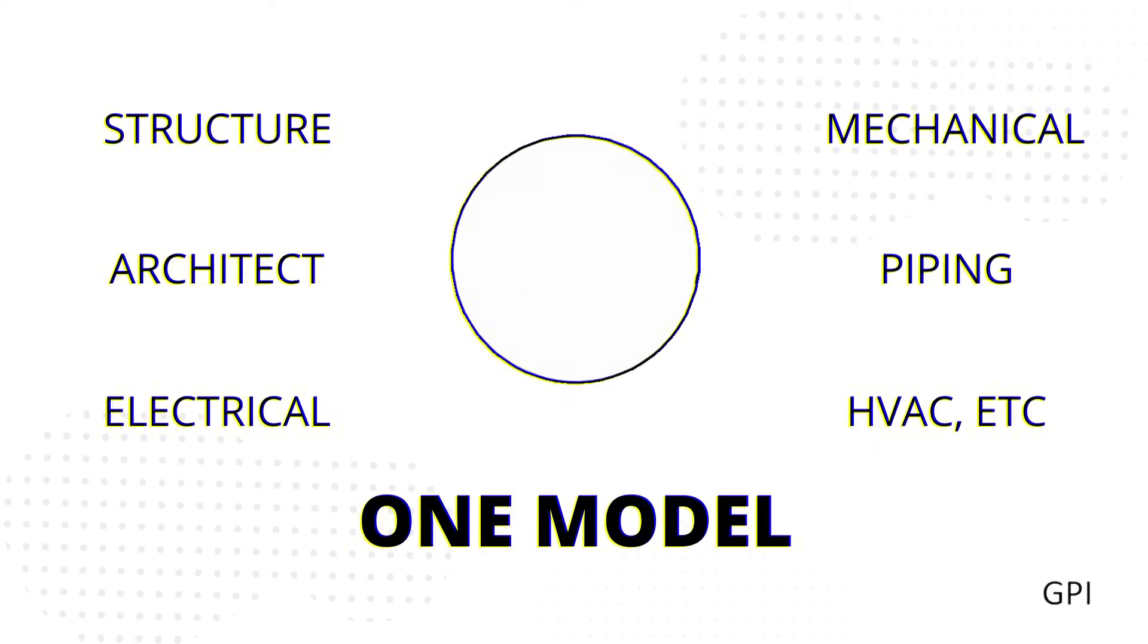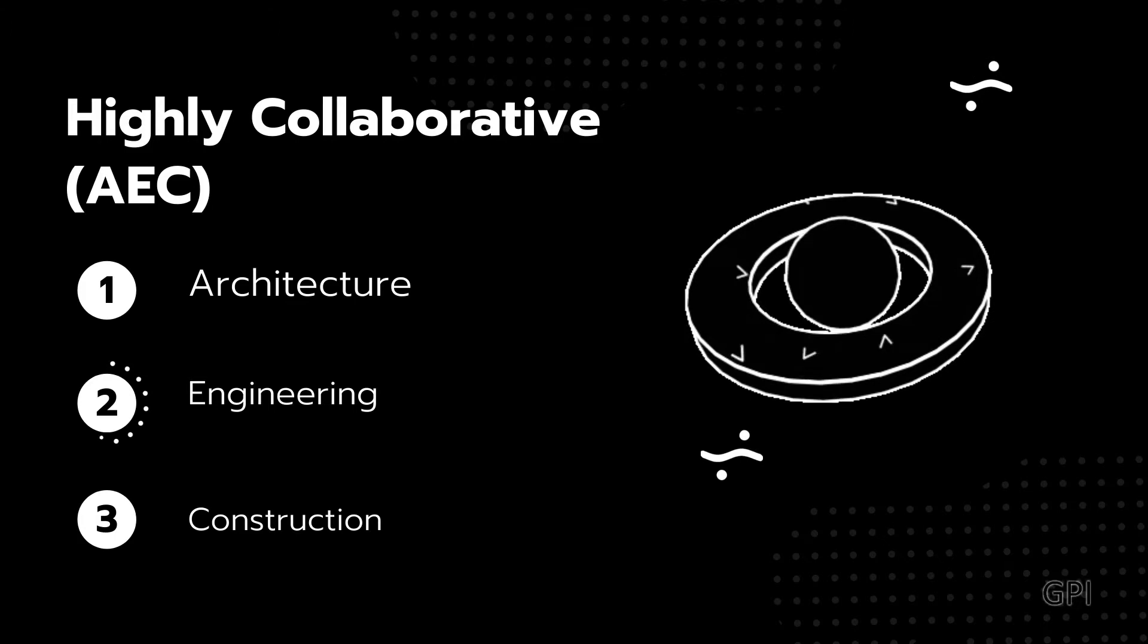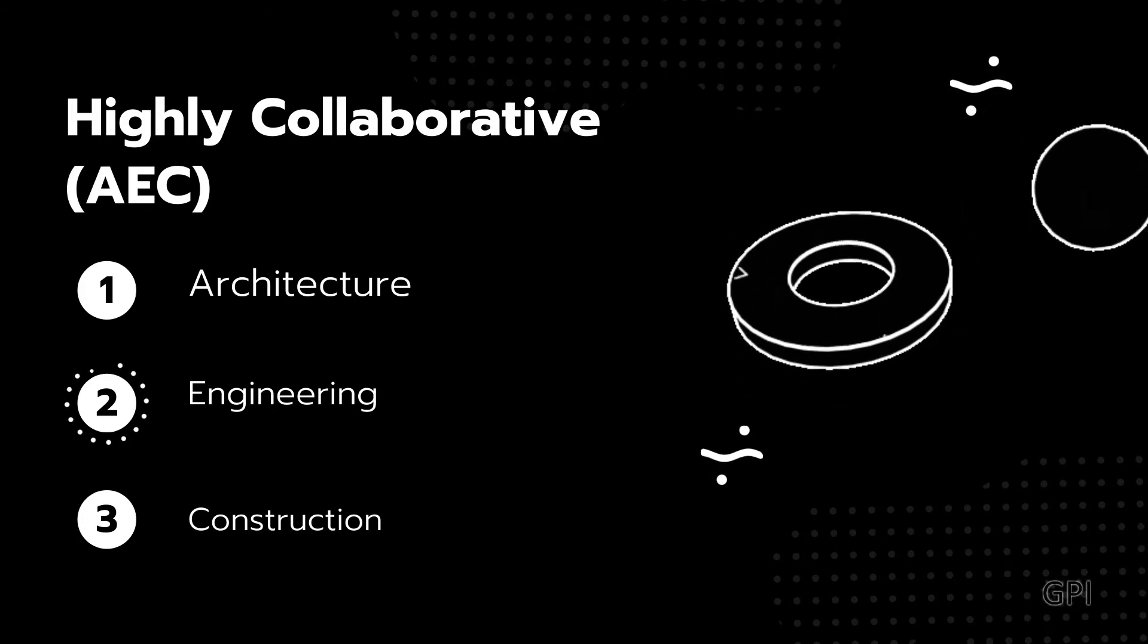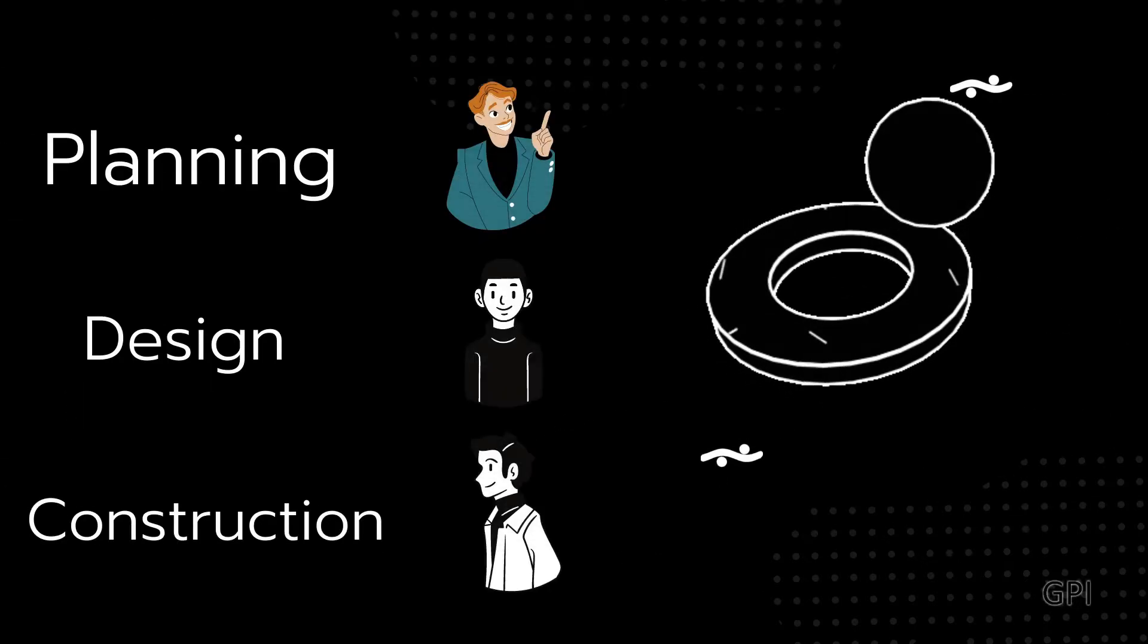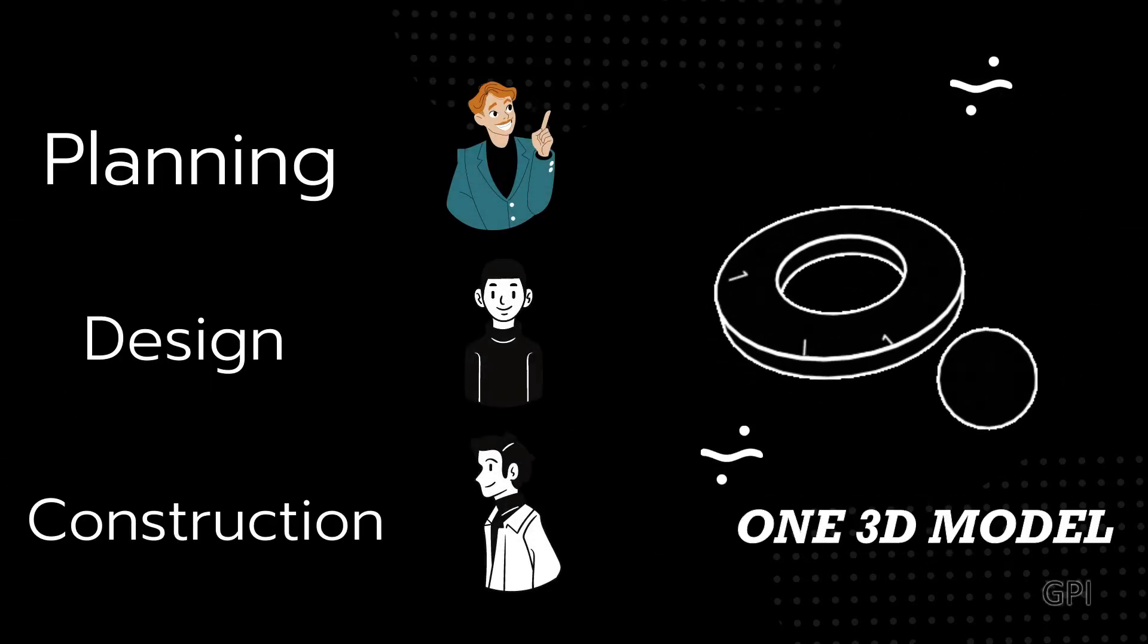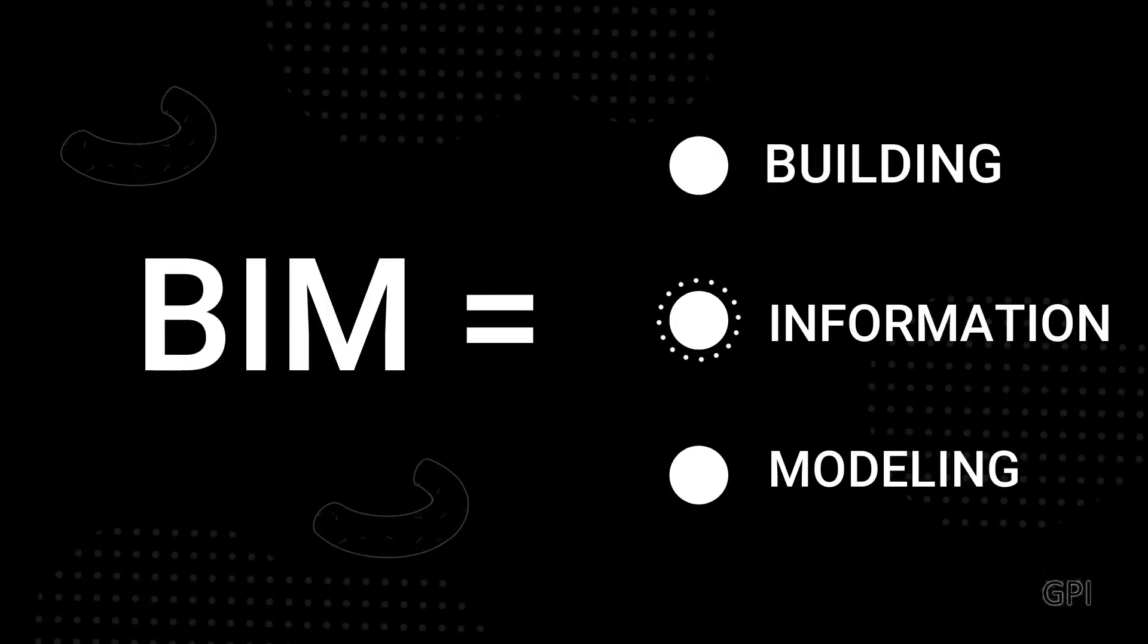It is a highly collaborative process that allows multiple stakeholders and AEC—which is Architecture, Engineering, and Construction—professionals to collaborate on the planning, design, and construction of a building within one 3D model. In simple terms, BIM is an abbreviation used to better understand the 3D modeling world.